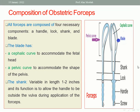What is the composition of obstetric forceps? It is formed of a handle, lock, shank, and the blades. These blades have a cephalic curve to accommodate the head, and a pelvic curve to accommodate the shape of the pelvis. The shank is 1 to 2 inches, depending on whether we are using long or short forceps — it will be shorter in short forceps. Its function is to allow the handle to be outside the vulva during application of force. The blades can be fenestrated, like Simpson and Elliott, or smooth, like Tucker-McLane.